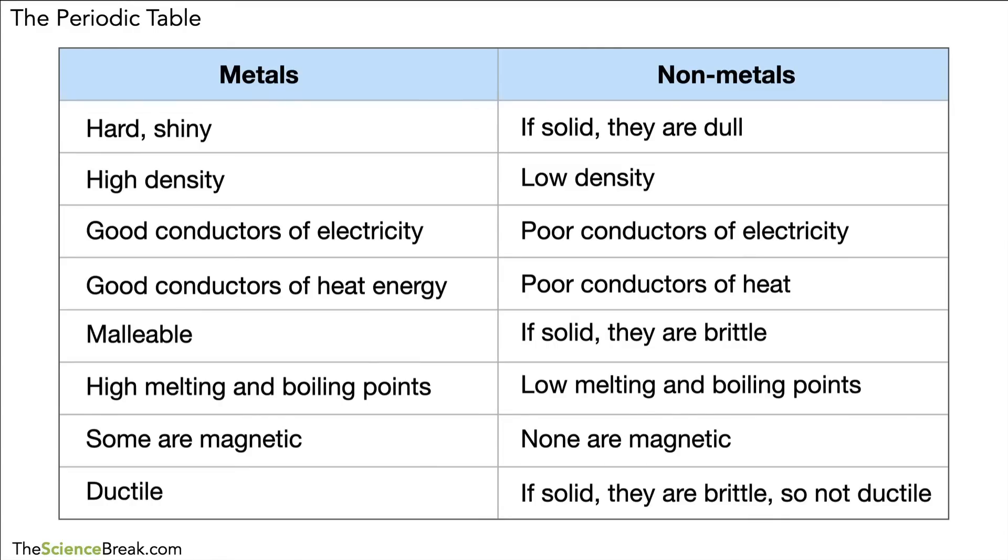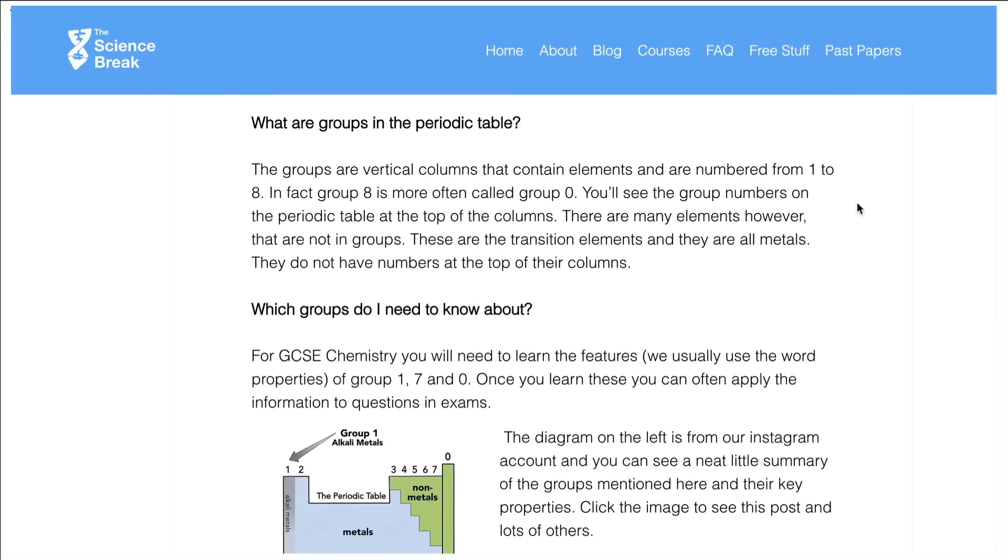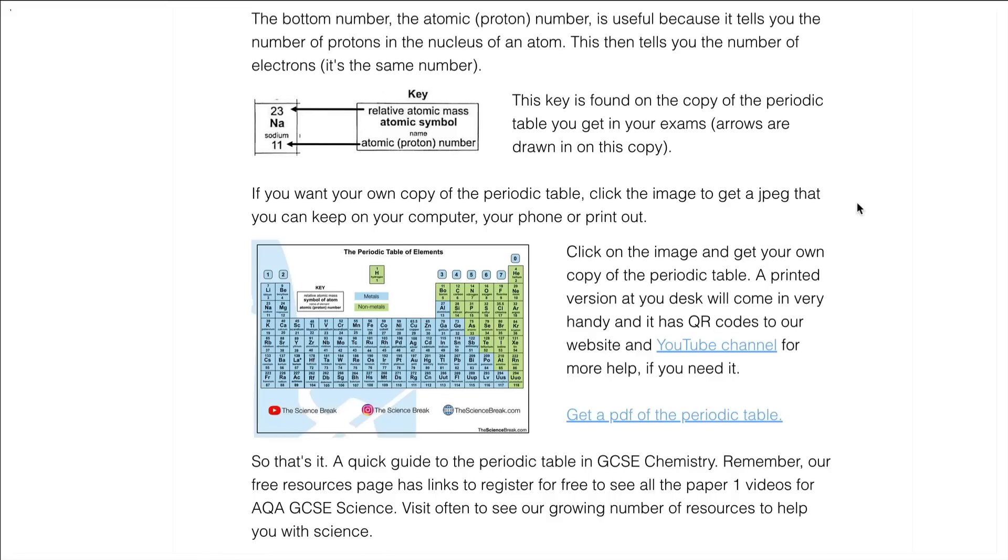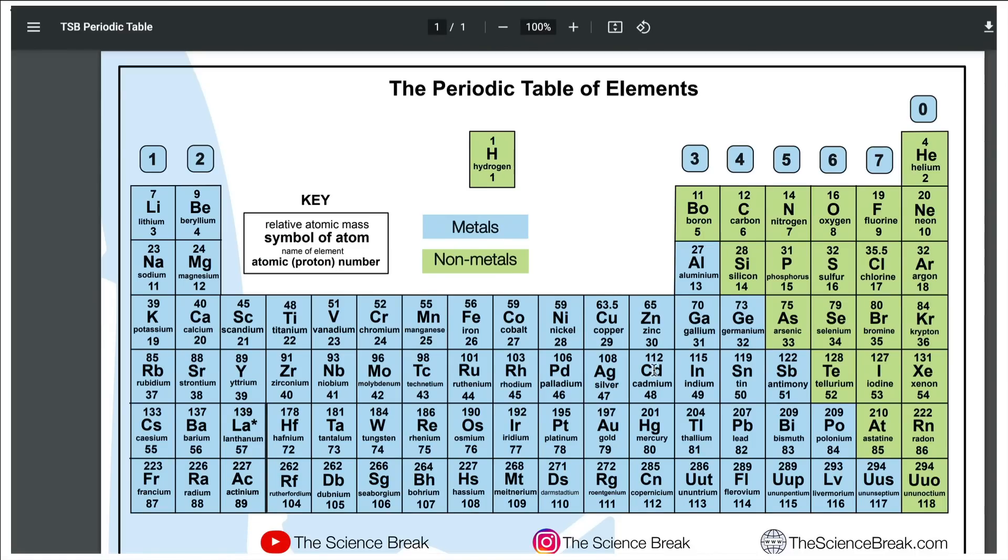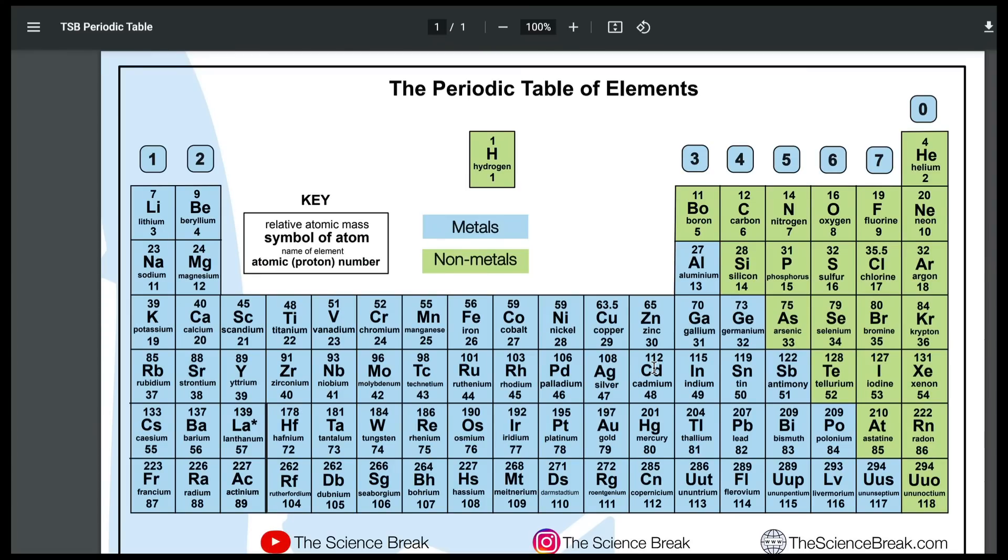So those are the key features of metals and non-metals, and you can take a screenshot of that if you wanted to keep that with you. Also remember that if you wanted a copy of a periodic table for yourself that looks a bit like this, you can head over to the website. The link is below in the description. Just scroll down to the bottom of the page and you'll see a link to the periodic table that you just saw on the screen. Just click on the link and you'll get yourself a PDF that you can put on the wall or have on your device so that you can refer to it if you need to. But that's it for today. Thank you for watching, and I'll see you soon.